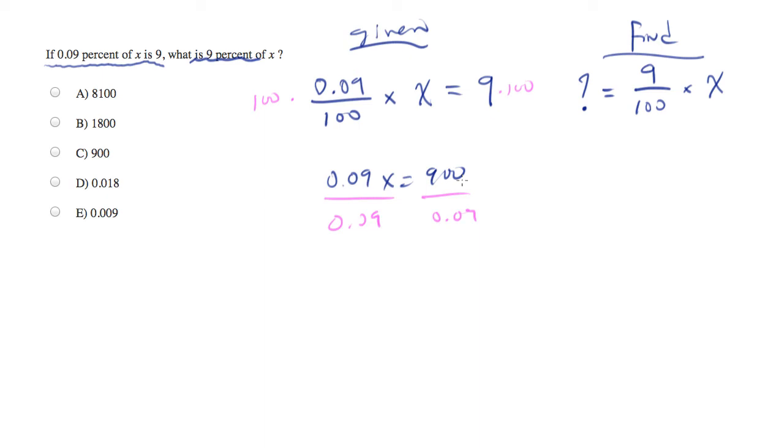How many times does 0.09 go into 900? 10,000 times, that's a lot. So X equals 10,000.